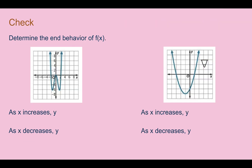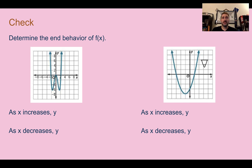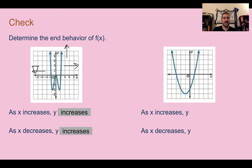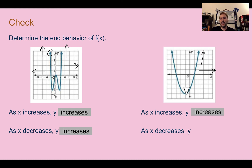Check your understanding: determine the end behavior of these two functions. Pause the video now and complete the check. Check your answer: for the first one, as x increases, y increases. And as x decreases, the arrow was going up, so y is also increasing. For the second one, as x increases, the arrow is going up — y increases. And same with decreasing — our value is going up.